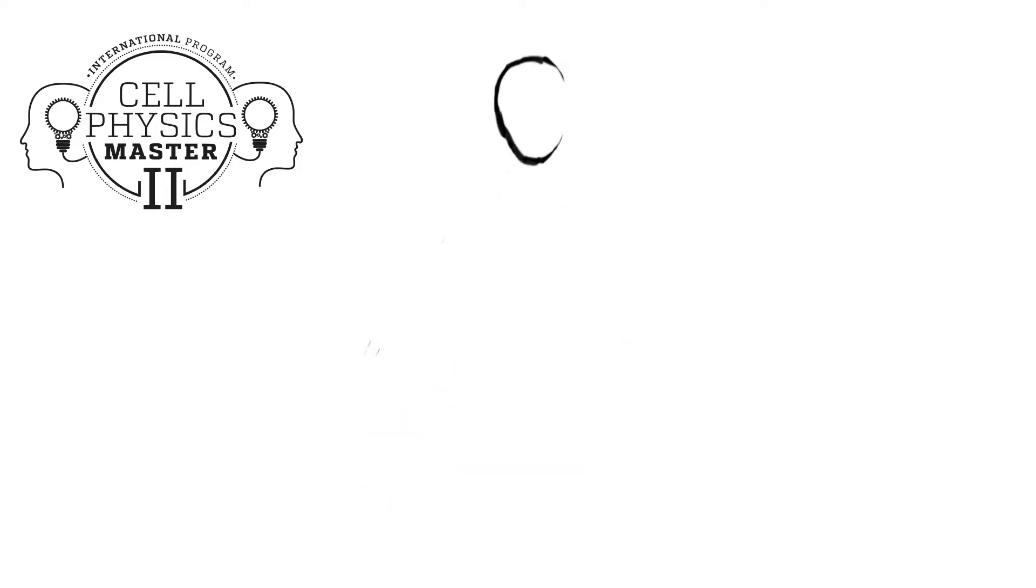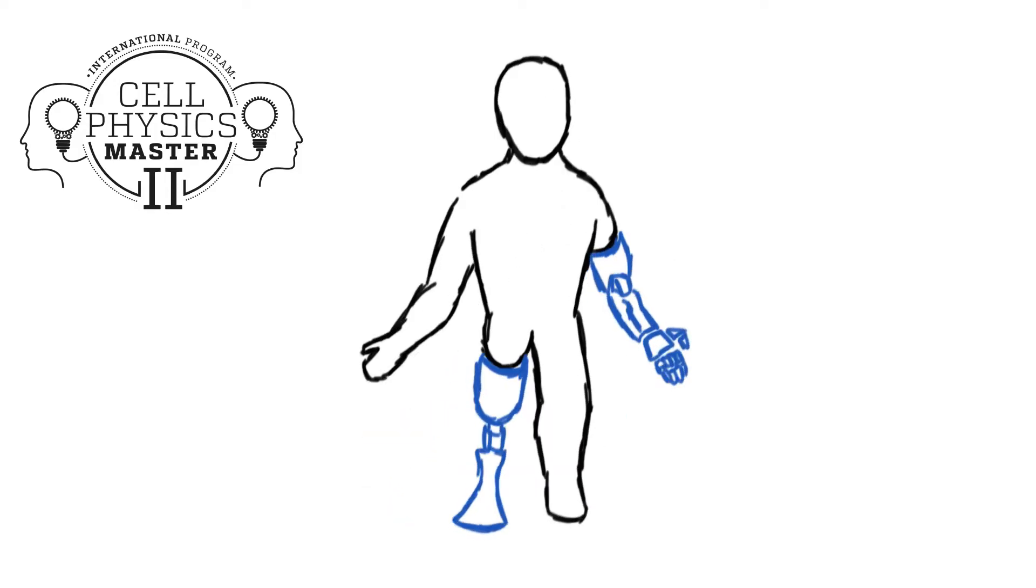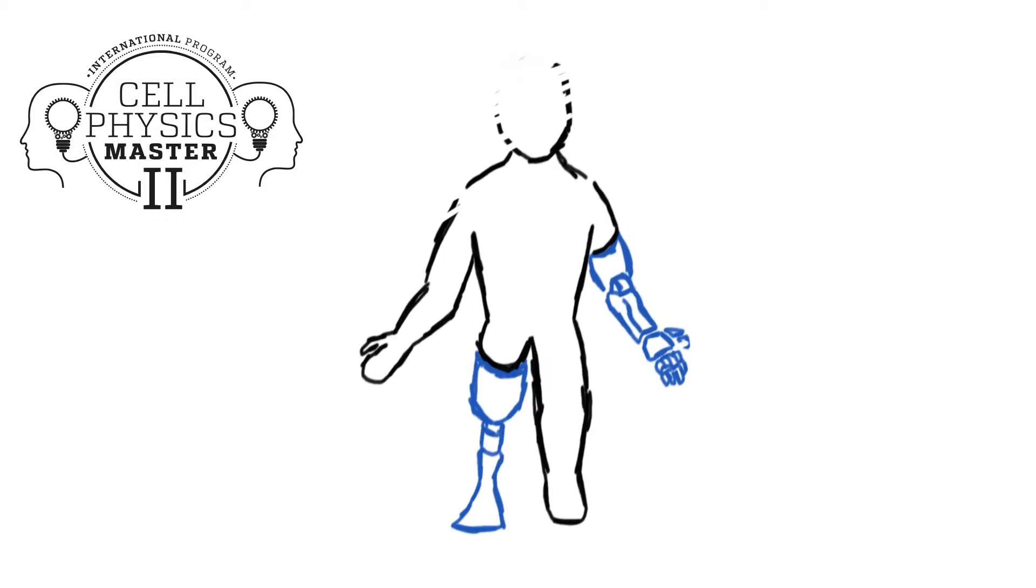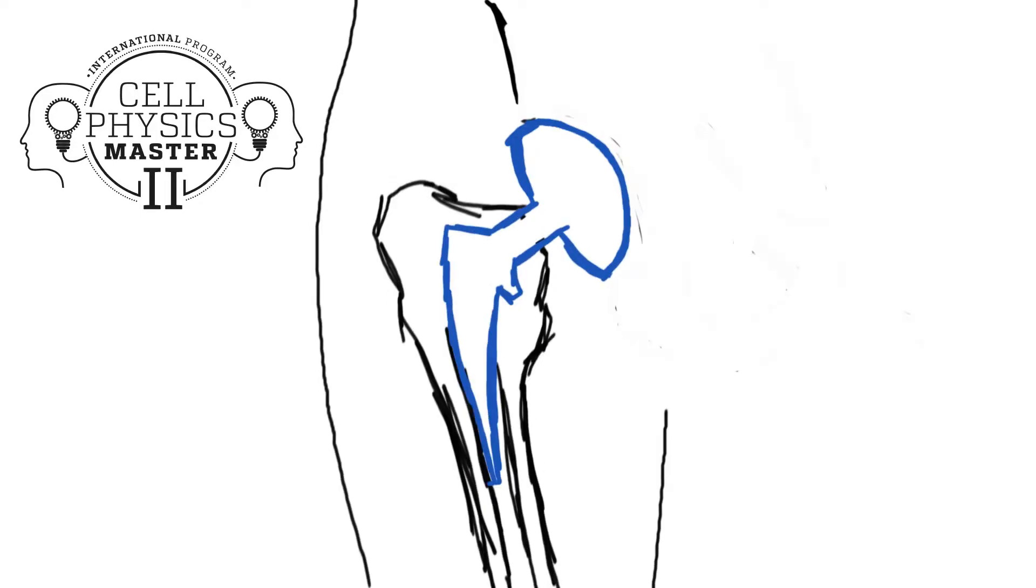You probably already know about limb prostheses. Most commonly, this type of prosthesis is a mechanical device which restores partially or totally the structure of the concerned limb.